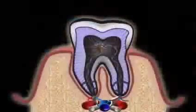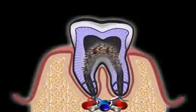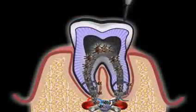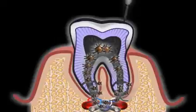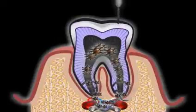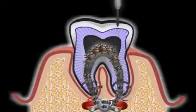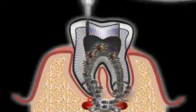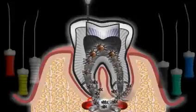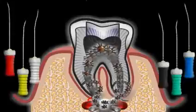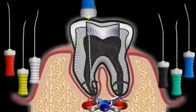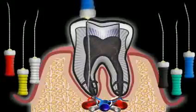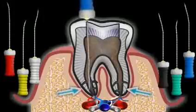The objective of a root canal treatment is to completely remove the destroyed tissue, which may also be infected with bacteria in some cases, from the interior of the tooth so that the infection is prevented from spreading to the bone. The tooth is connected to the bone through numerous small canals at the end of the root.